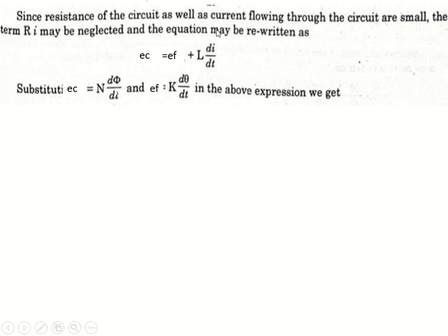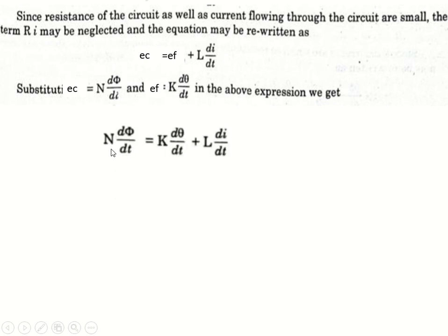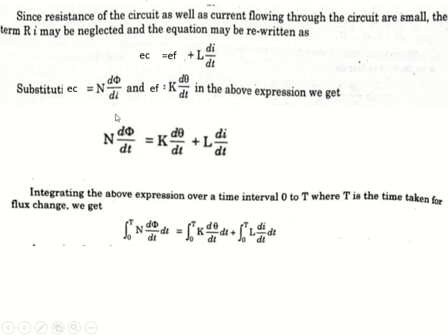Since the resistance of the circuit as well as the current flowing through the circuit are small, we can neglect the term R×i. So Ec becomes Ef + L × di/dt. Substituting Ec = N × dΦ/dt and Ef = K × dθ/dt, we get: N × dΦ/dt = K × dθ/dt + L × di/dt.